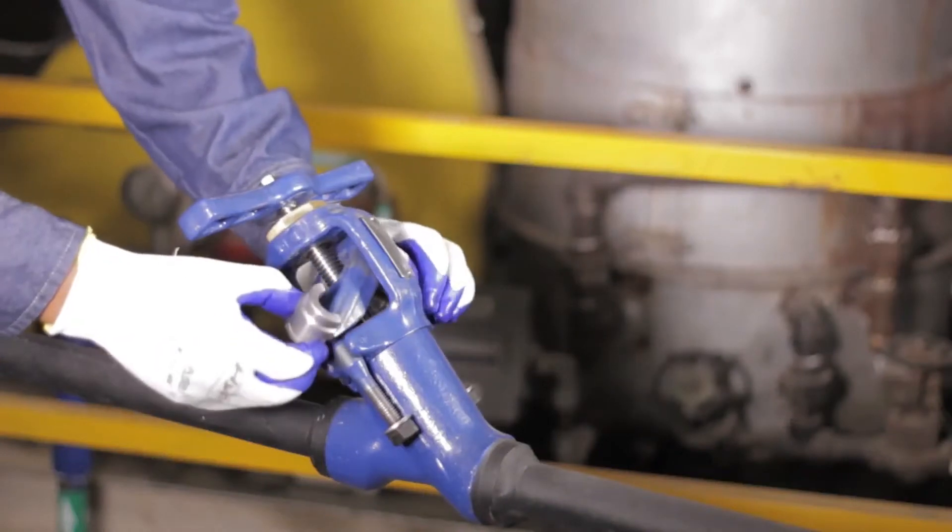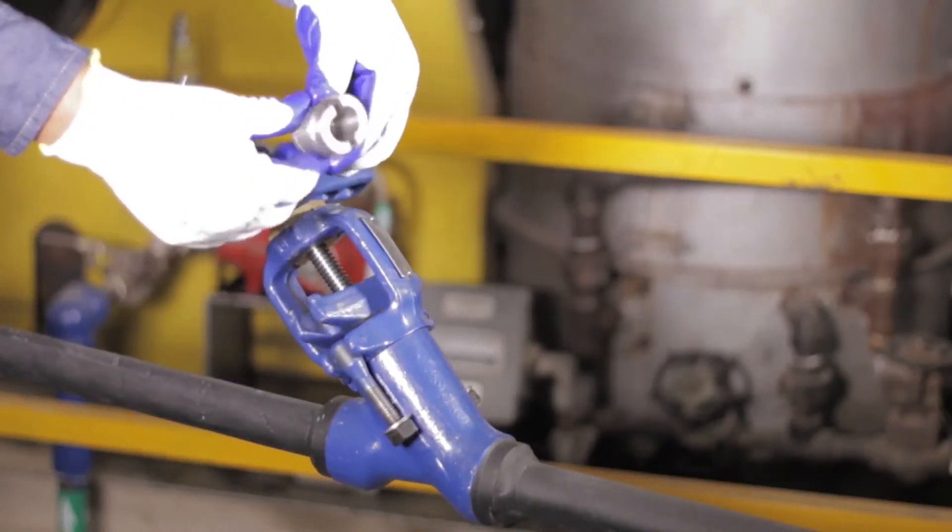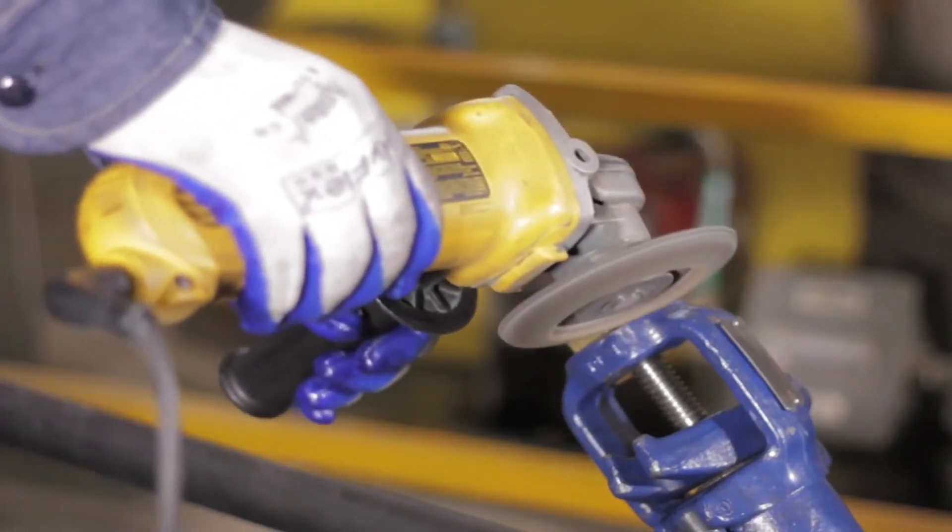You can start off the same way as before by loosening the swing bolts. The packing gland is lifted so you can remove the split gland bushing.